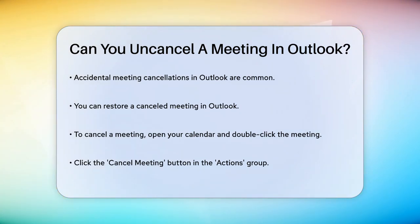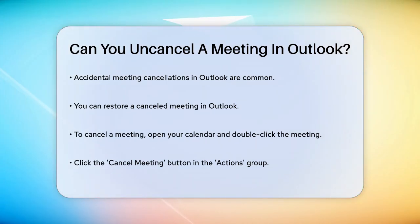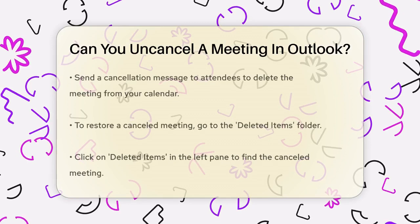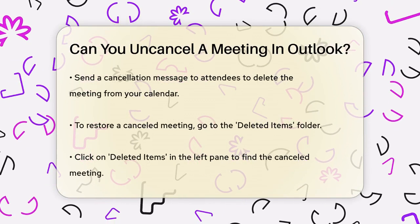When you cancel a meeting in Outlook, you open your calendar, double-click on the meeting you want to cancel, and then click the Cancel Meeting button in the Actions group. You'll be prompted to send a cancellation message to the attendees, and once you do, the meeting will be deleted from your calendar.